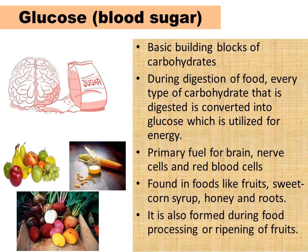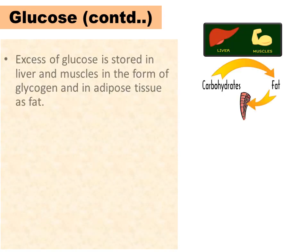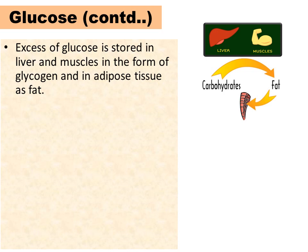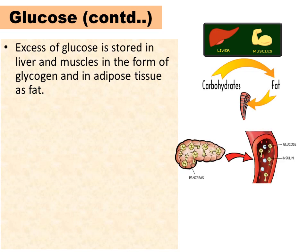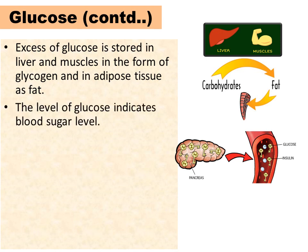Glucose is available in foods like fruits, sweet corn syrup, honey and root vegetables. Excess glucose in the liver and muscles is stored as glycogen, and in adipose tissues as fat. Glucose can enter cells with the help of the hormone insulin. The level of glucose in blood is used to indicate blood sugar level.